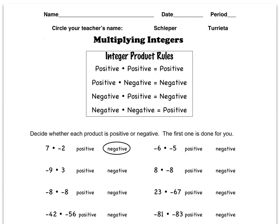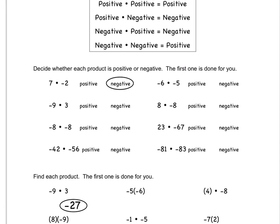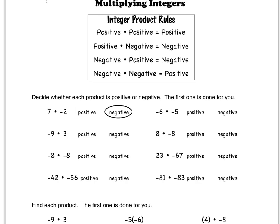I'll do one more here for you as an example. Here's a good one. This one says negative 81 times negative 83. Well, I have a negative times a negative, so I can look up here and I can see negative times a negative is positive. So then I'll go ahead and grab my red pen and circle positive.